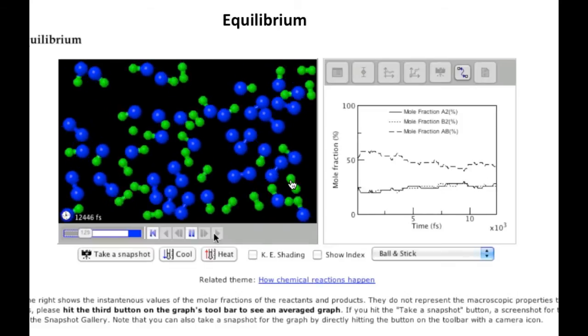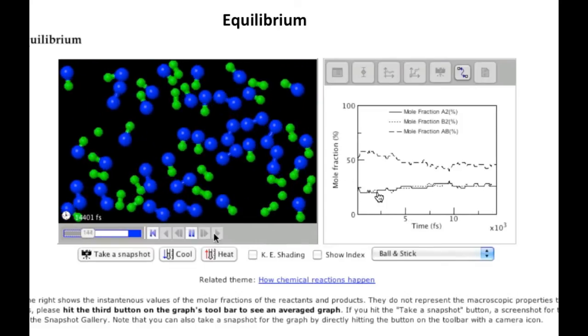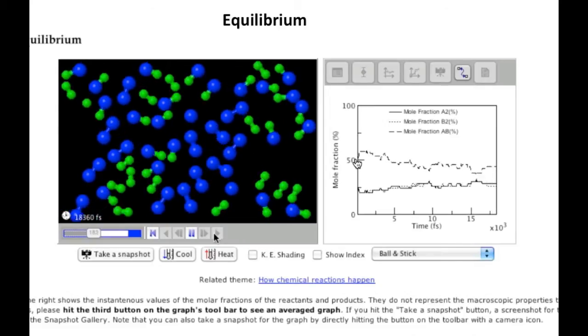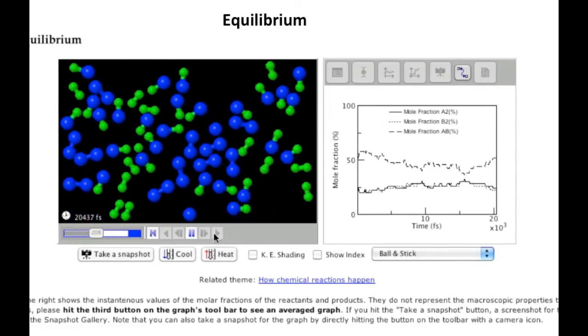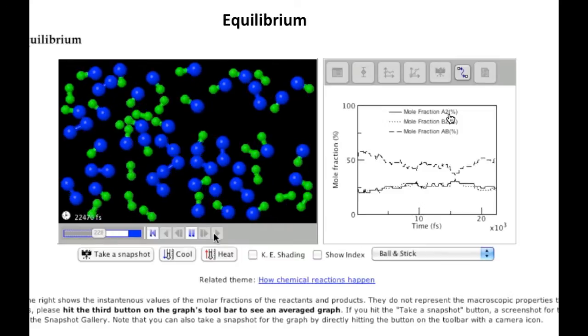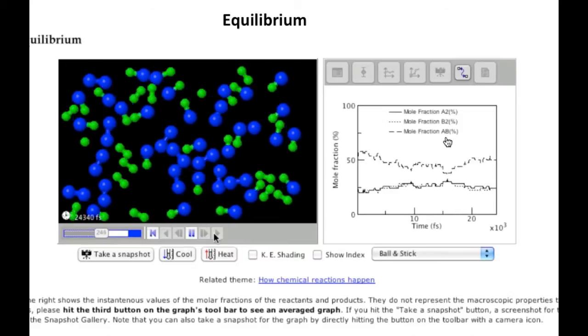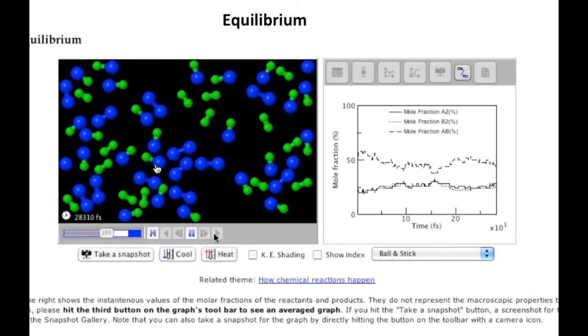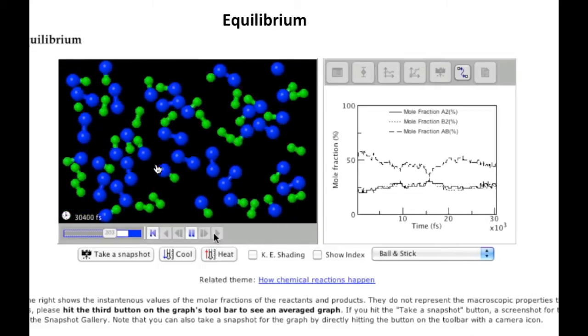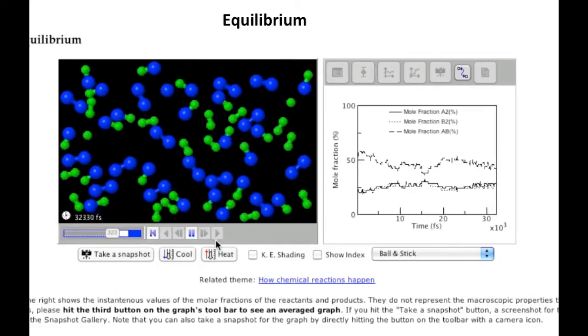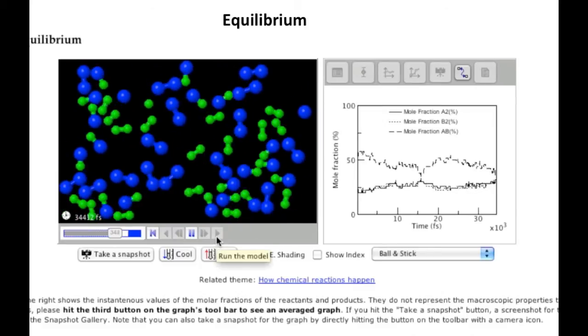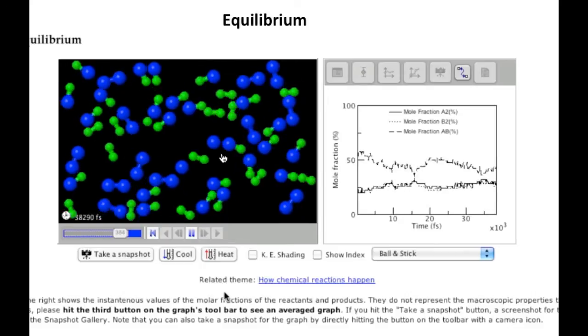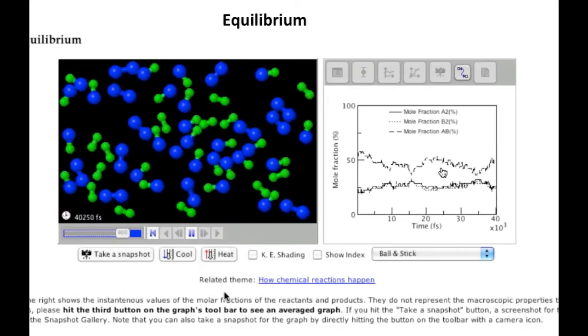And what you see here is the reaction going on, and you see the mole fractions of each as a function of time. So you have the mole fraction of A2, let's call those the blue ones, B2 the green ones, and AB is the blue-green ones here. And as you can see, some molecules react, some don't, and the concentration of each fluctuating with time. You can see that over here.